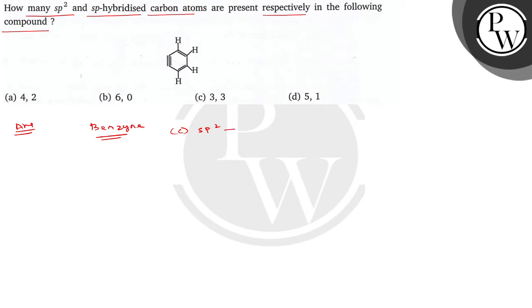The overlapping of sp2 orbitals forms the sigma bond, and the pi bond is formed by the overlapping of unhybridized p orbitals.